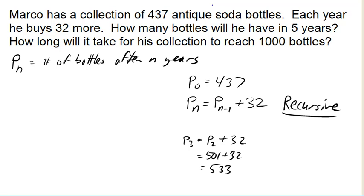Linear growth is what we get whenever we grow by a constant number amount. So in this case, we're growing by 32 each year.